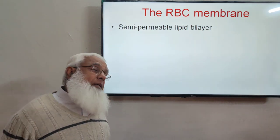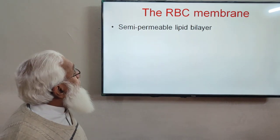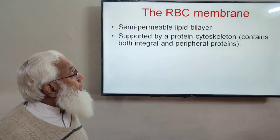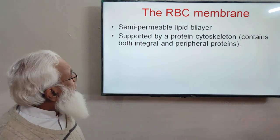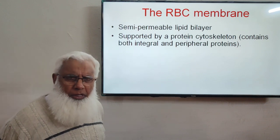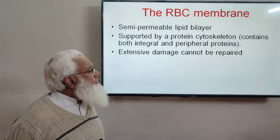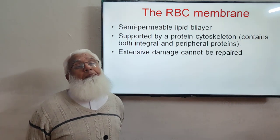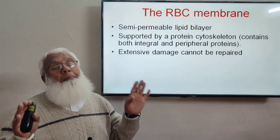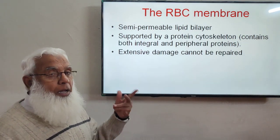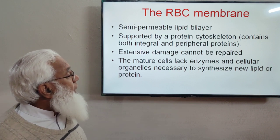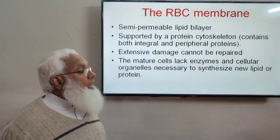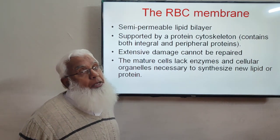The RBC cell membrane is a semi-permeable lipid bilayer supported by a protein cytoskeleton, containing both integral and peripheral proteins. Extensive damage to this membrane cannot be repaired because there is no nucleus. Mature RBCs lack the enzymes and cellular organelles necessary to synthesize new lipid or protein for membrane repair.